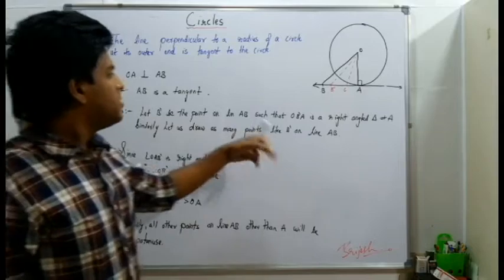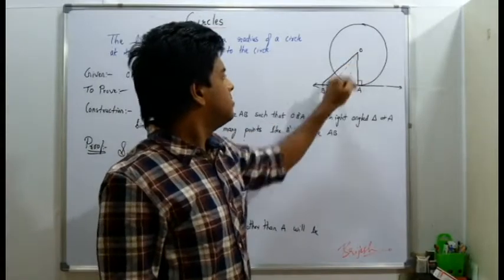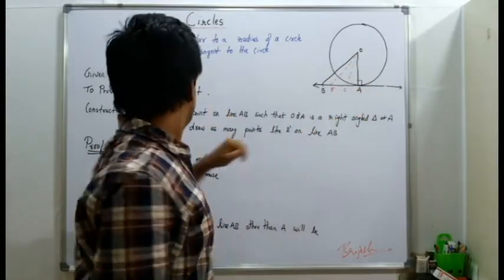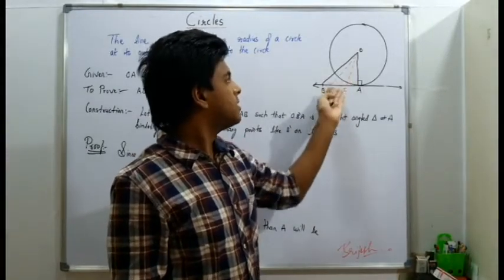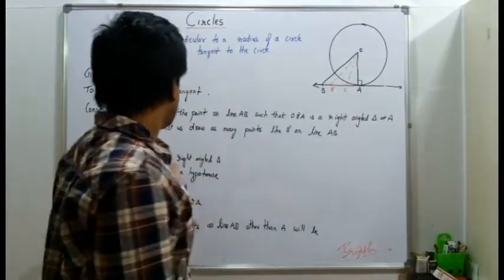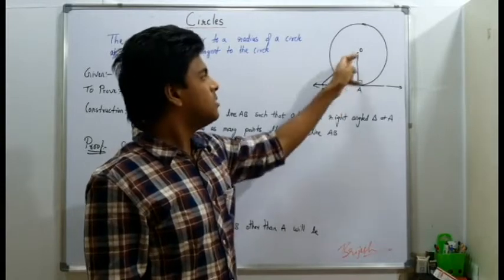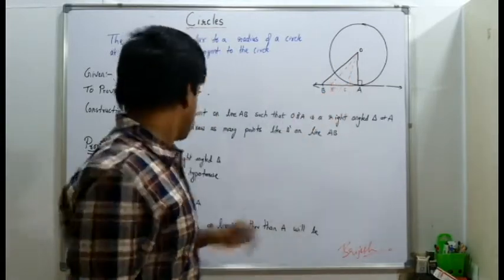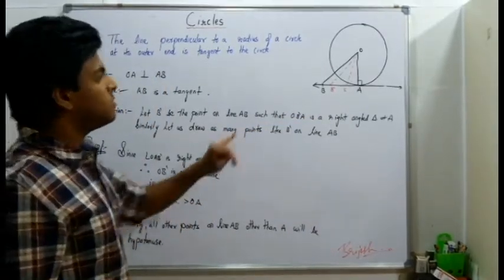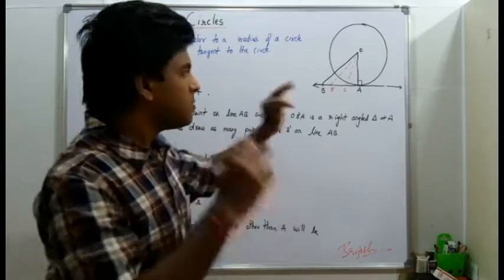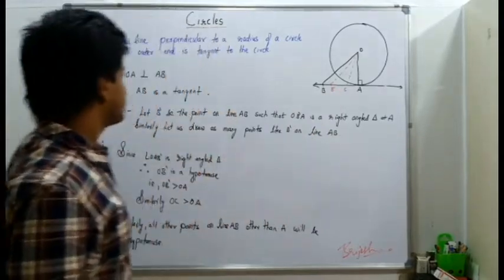Let B dash be the point on line AB such that OB dash forms a right angle at A. Similarly, let us draw more points like here I have drawn one more point C. In fact, triangle OCA will be right angle at A. In such case, if it is right angle at A, OB dash will be hypotenuse. Similarly, OC will also be hypotenuse. OB dash will always be greater than OA. OC will always be greater than OA. Similarly, any other point except A on this line will always be greater than A.